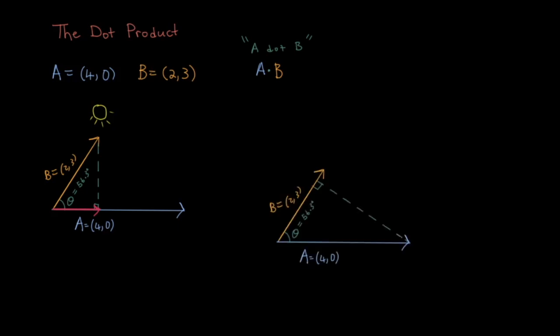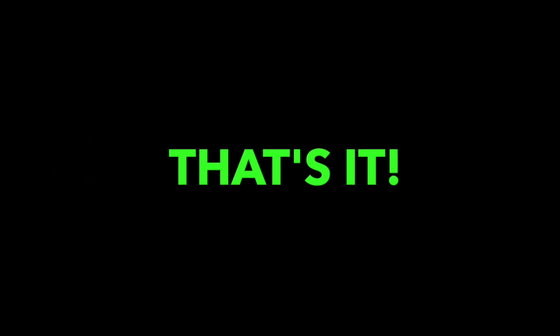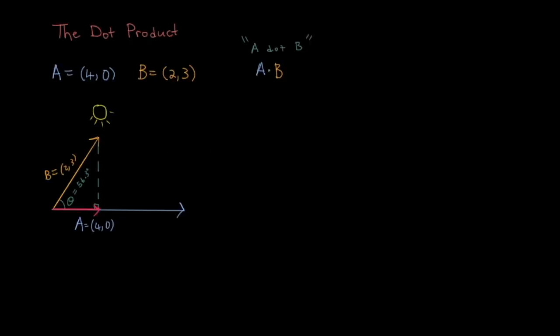We can look at it as B times the component of A that's parallel to B. Or in other words, B times the shadow that A casts on B. And that's pretty much it. In a nutshell, that is the visual representation of the dot product.